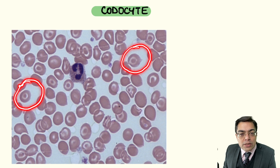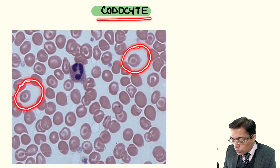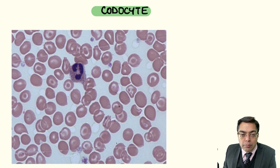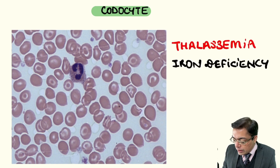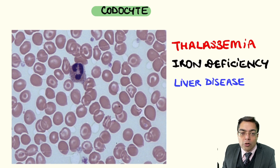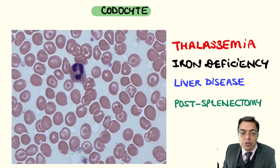What are the conditions where we expect to find the presence of a target cell, or technically what is being termed as a codocyte? Four conditions which are commonly asked in exams that you need to keep in mind: the first being thalassemia, the second condition being iron deficiency anemia, the third condition is a patient suffering from liver disease, and the fourth condition is a patient after undergoing splenectomy.